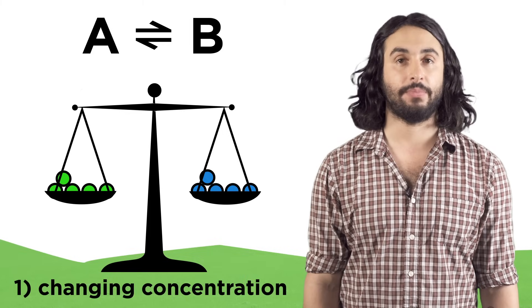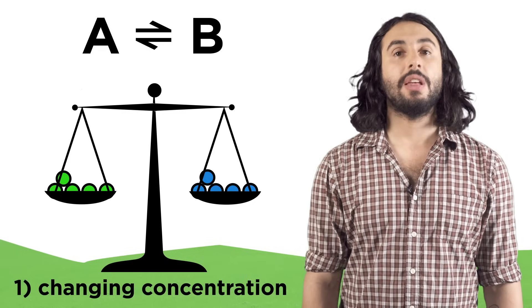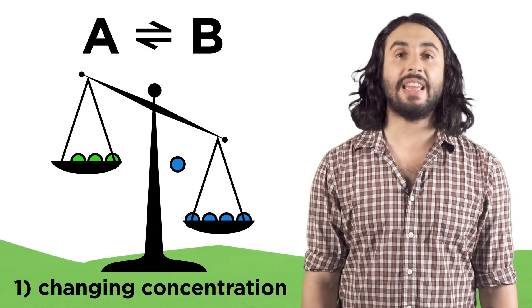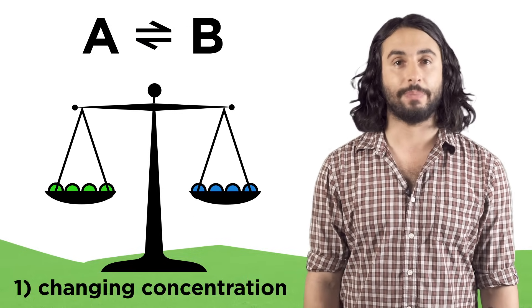The equilibrium is said to have shifted right. If we add more products, it would shift left. Likewise, if we selectively remove one of the components, the equilibrium will shift to produce more of that species to restore balance.